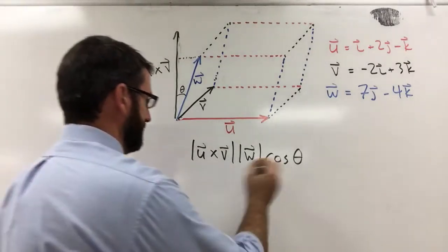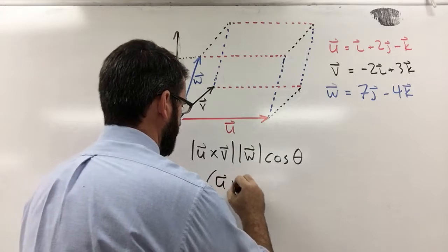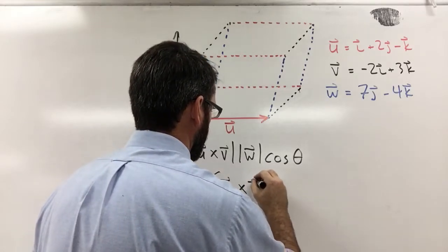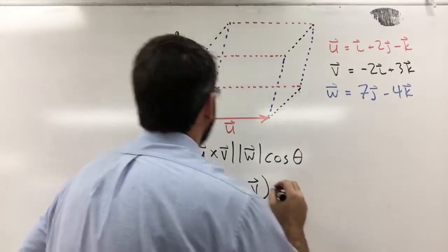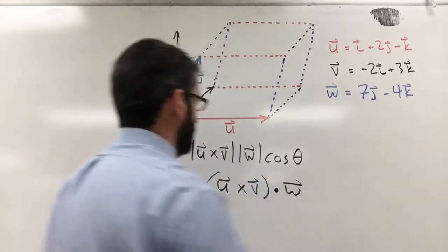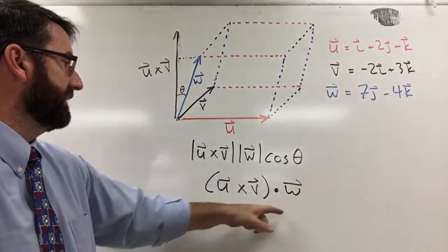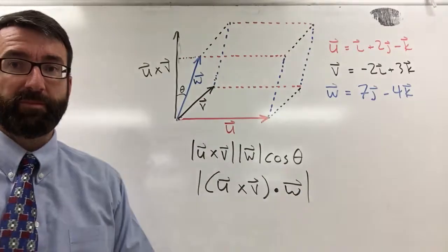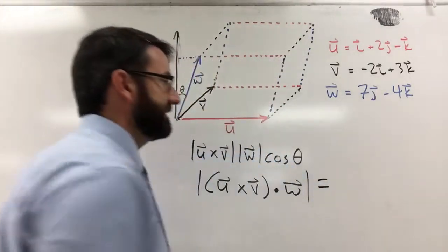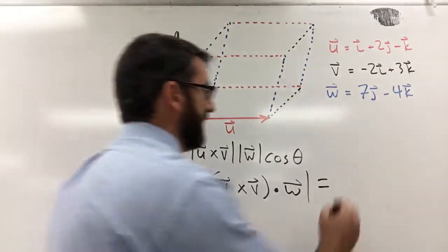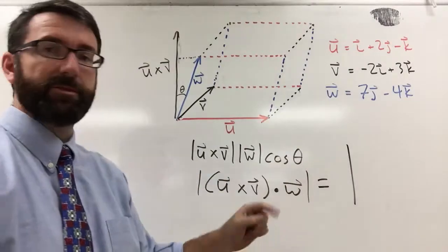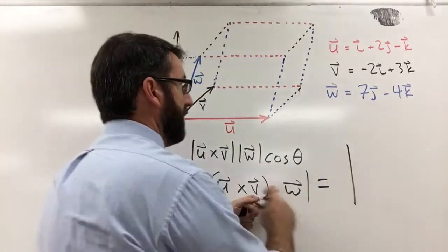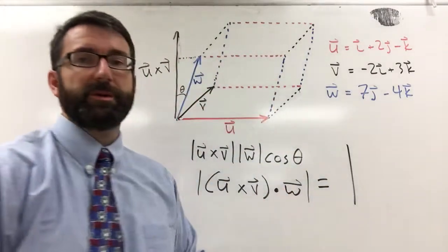This is going to be equal to u cross v dot w. This is called the triple scalar product, and its absolute value is going to give us the volume of this parallelepiped. It turns out that this is going to be equal to the determinant of a three-by-three matrix where the top row is the components of u, the middle row is the components of v, and the bottom row is the components of w.